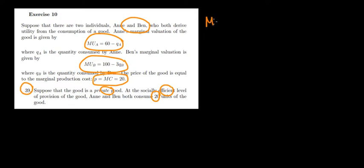So we have to find out the optimal consumption for Anne, which will be the marginal utility of Anne equals the marginal cost of the good. And then we'll do the same for Ben. What is the marginal utility for Anne? It's 60 minus the quantity of that good that Anne consumes equals the marginal cost, which is 20 euros.